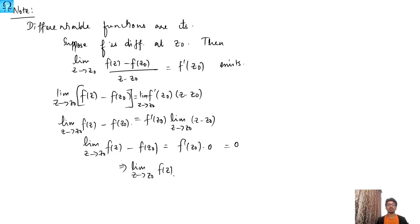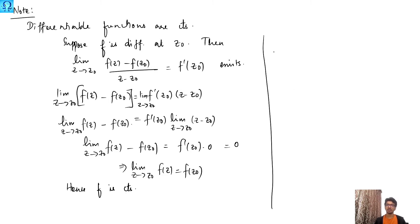Therefore the limit as z approaches z naught of f(z) equals f(z₀), and since the choice of z naught was arbitrary we conclude that the function f is continuous. For the converse — the converse need not be true.